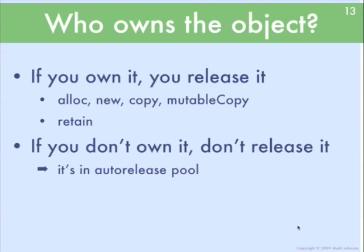I've mentioned the idea of who owns the object — this is how a lot of people teaching memory management on the iPhone explain it. If you own an object, you have to release it. You own an object if you created it using alloc, new, copy, or mutable copy, or if you manually retain an object in your code. If you retain an object, you're claiming ownership of it, and if you claim ownership, then at some point you're responsible for releasing it. The corollary is also true: if you don't own it, you shouldn't release the object.